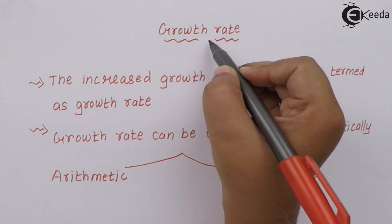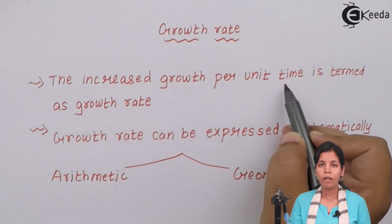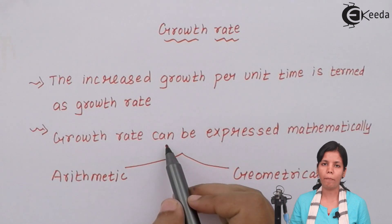The growth rate of a plant is the increased growth per unit time. At every moment when the plant is increasing, it is termed as growth rate. Now growth rate can be expressed mechanically just by seeing visually. We can say that the plant has grown but there are mechanical ways or you can say mathematical equations to prove that a plant is growing.